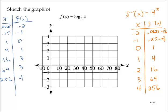0.0625, negative 2, so very close to the y-axis. 0.25, negative 1; 1, 0.